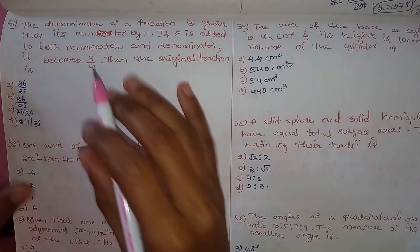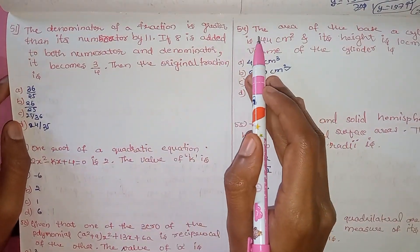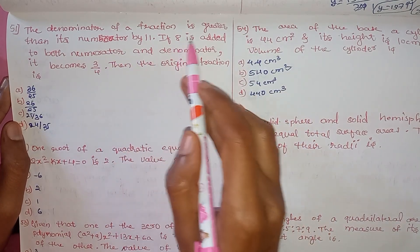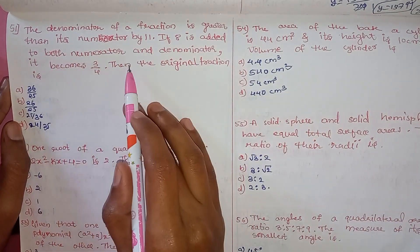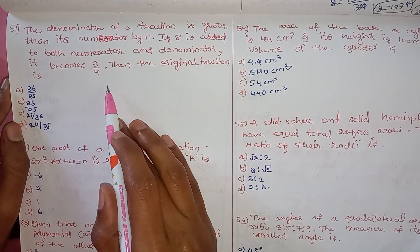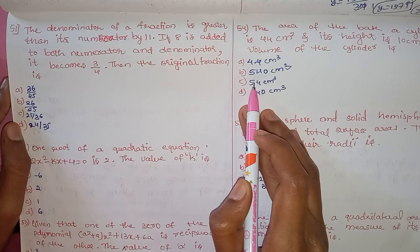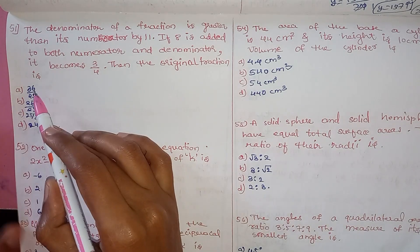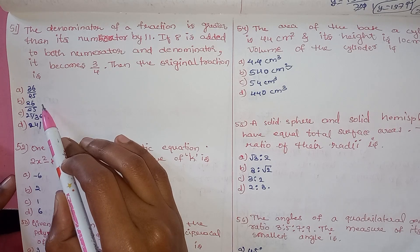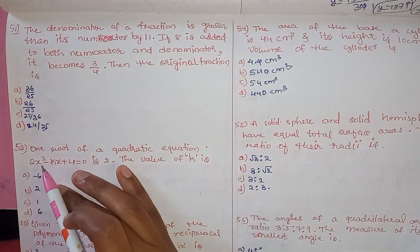Question 51: The denominator of a fraction is greater than its numerator by 11. If 8 is added to both numerator and denominator, it becomes 3/4. Then the original fraction is. The options given are 36/25, 26/25, 25/36, or 24/35.